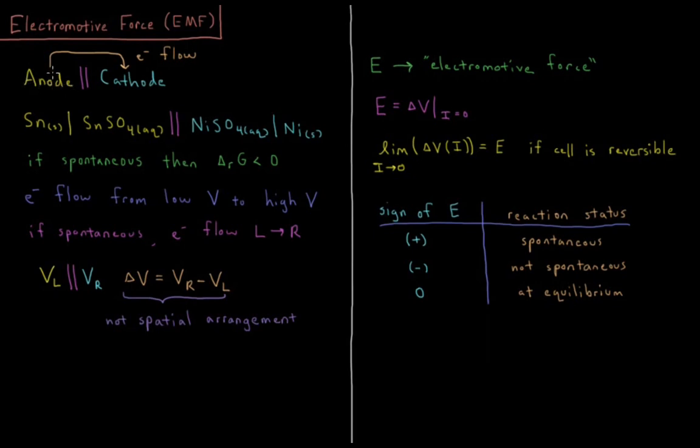Electrons that get oxidized flow from the left to the right over to our cathode where reduction occurs. Those electrons are gained over here with our salt bridge double bar in the middle. For our typical reaction we've been using in this chapter, we have tin solid oxidized to tin 2+ aqueous cations, and then we have the reduction of nickel 2+ aqueous cations to nickel solid metal.